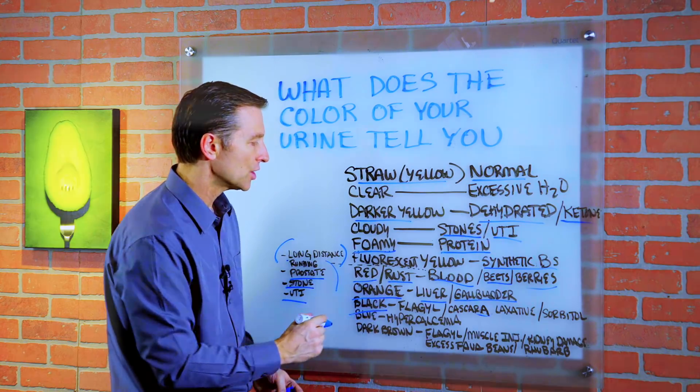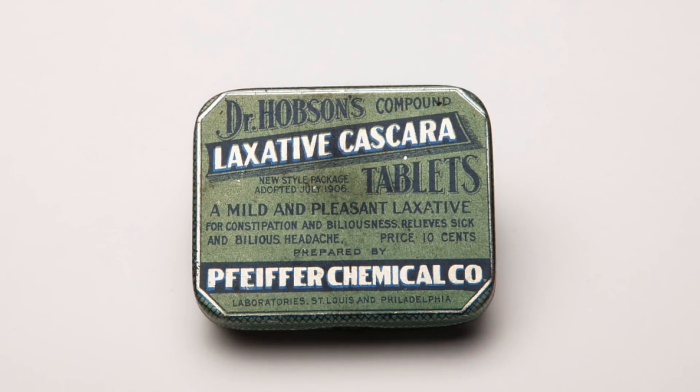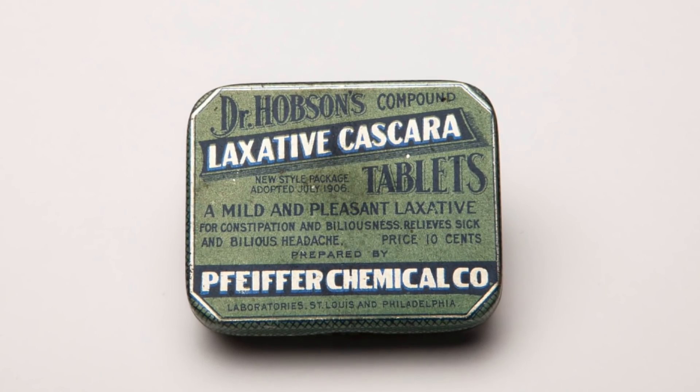If the urine is black, it could be an antibiotic called Flagyl, or it could be the herb cascara, which is a laxative, or the sweetener sorbitol.